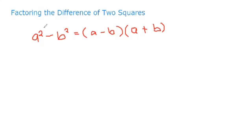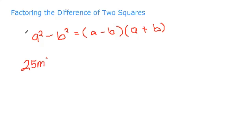For example, we have 25m raised to 4 minus 81n squared. So let's work on this.